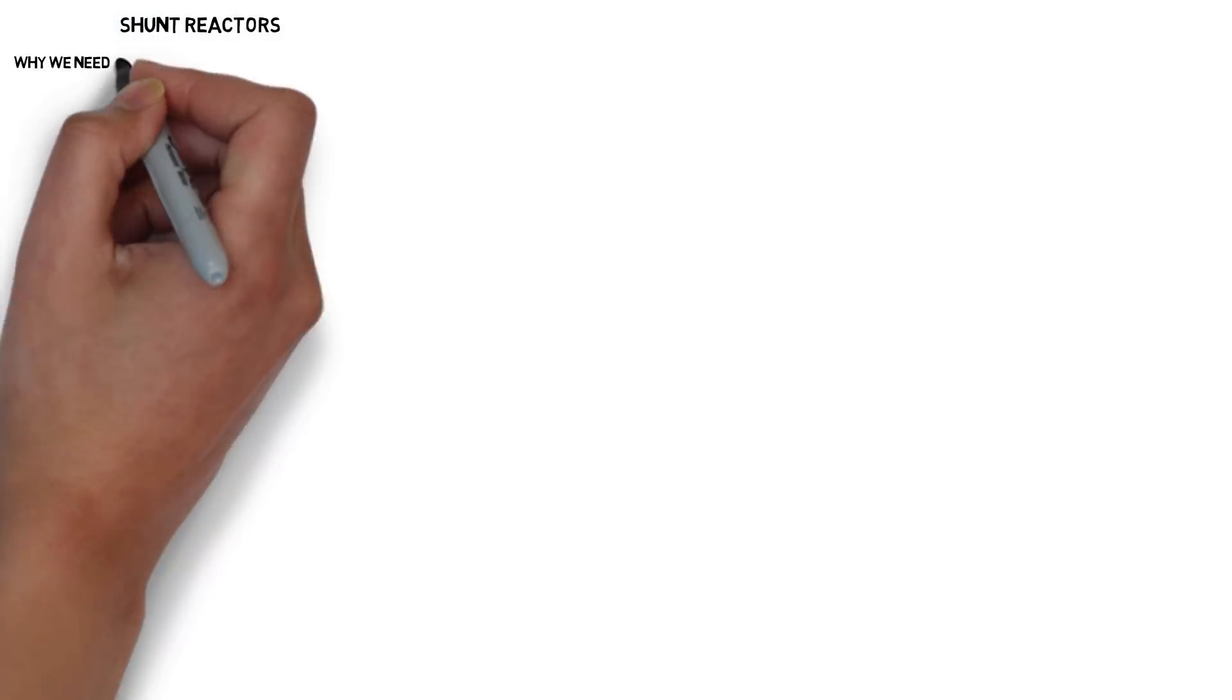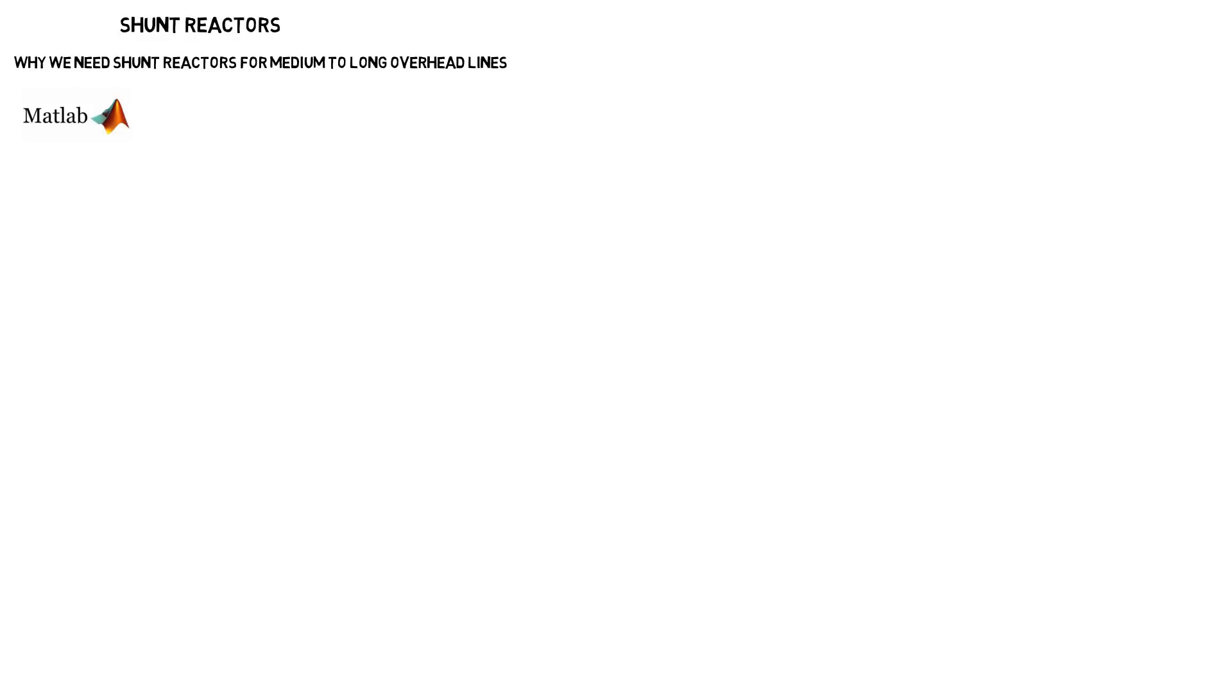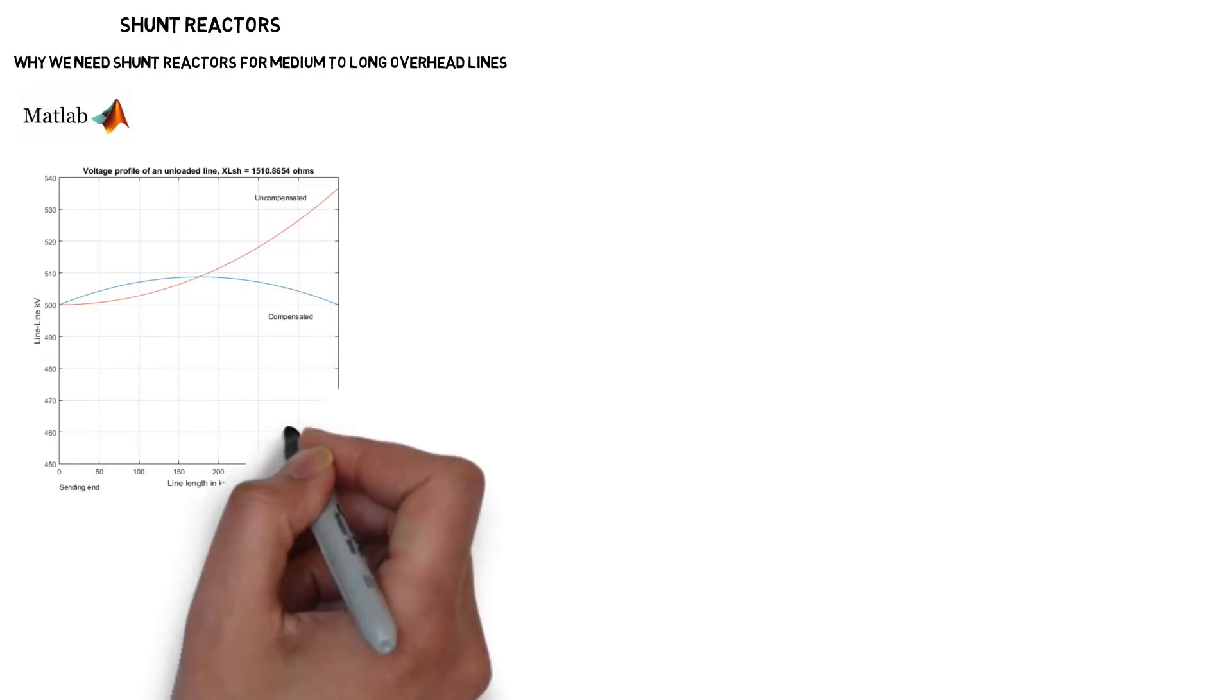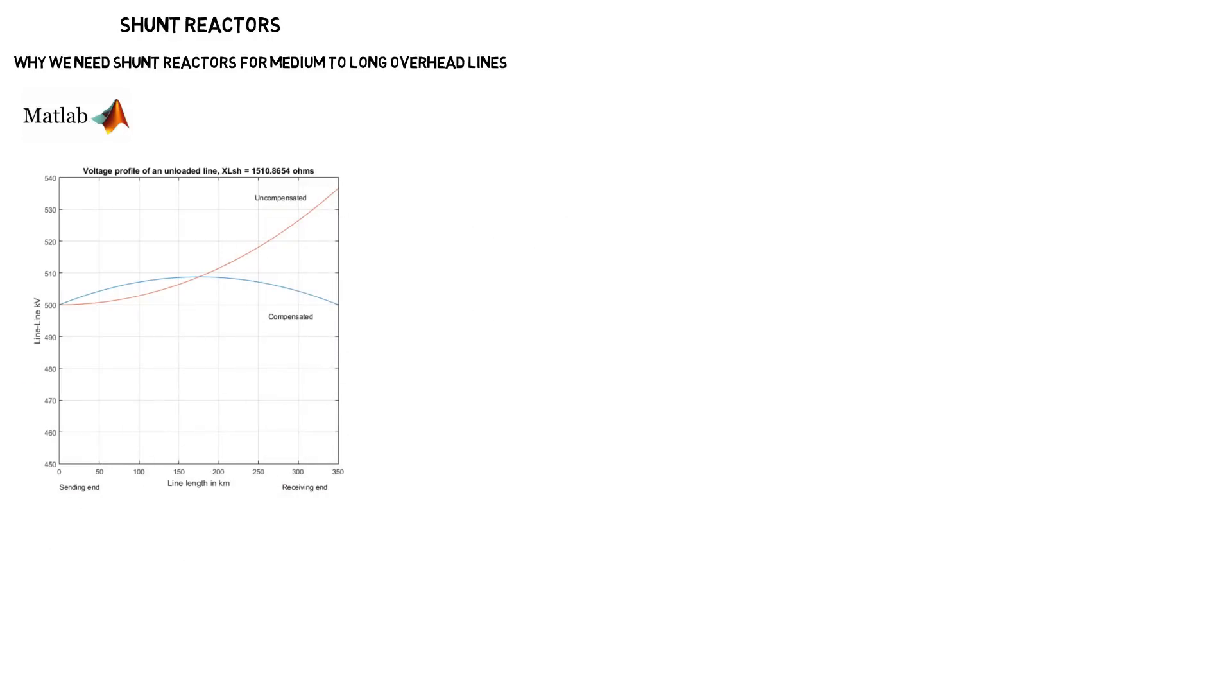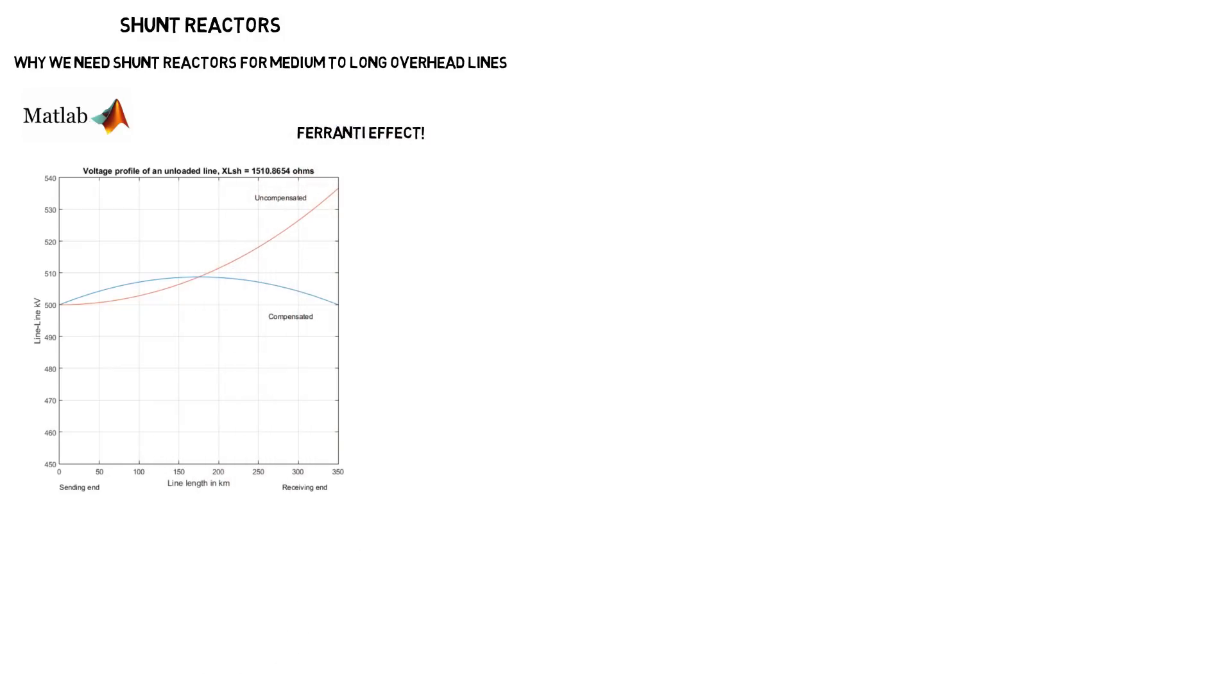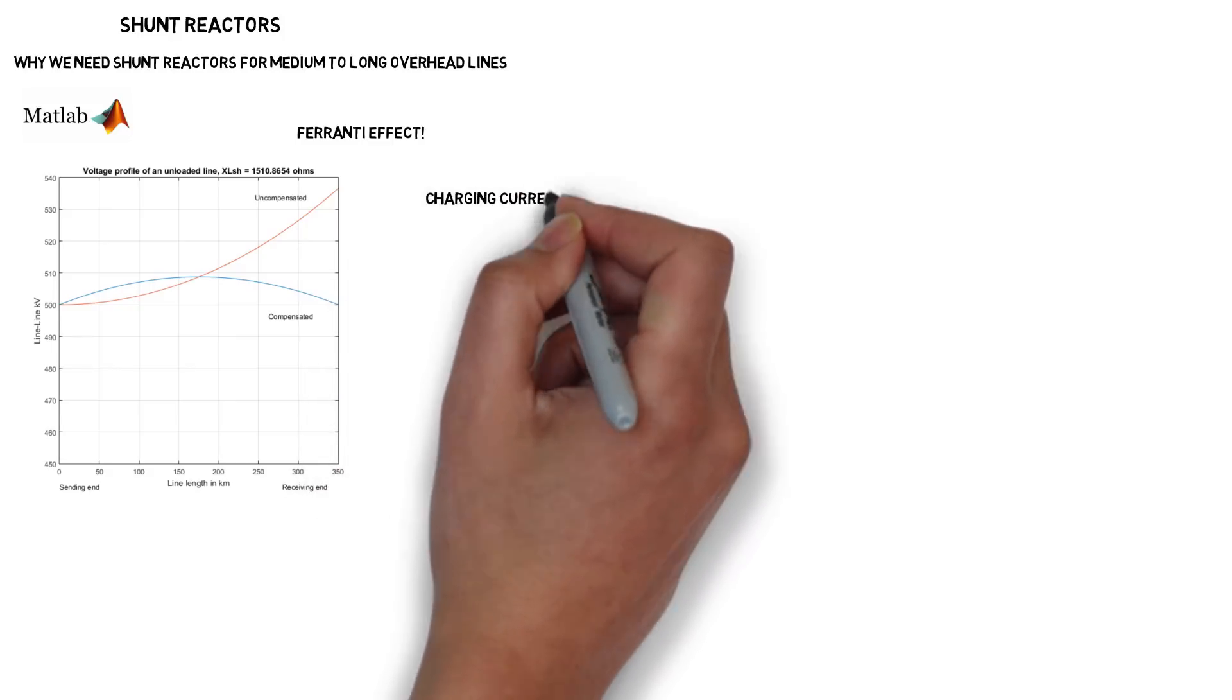First let's discuss inductors also known as reactors. To observe the Franti effect I used MATLAB to simulate an open circuit long transmission line and then plotted the voltage. I added a reactor to maintain the receiving end and compared this with the uncompensated line. From the results one can see the voltage on the receiving end for an uncompensated line is significantly larger than the sending end. The voltage rise at the receiving end is known as the Franti effect and is caused by charging current interacting with the inductance of the line.